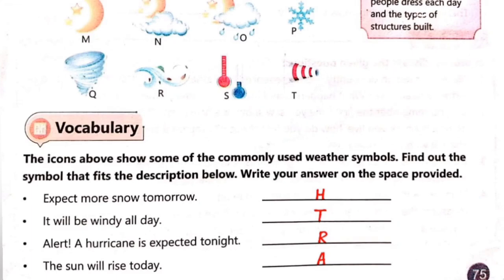The icons above show some of the commonly used weather symbols. Find out the symbol that fits the description below and write your answer on the space provided. Pehle hamare paas kuch weather symbols the jinke humne meanings discuss kiye, ab hamare paas weather ki description maujood hai aur humne batana hai ke wo in symbols mein se kis ke saath fit karti hai. First one is 'expect more snow tomorrow' — answer is H. Next, 'it will be windy all day' — answer is T. Number 3: 'alert, a hurricane is expected tonight' — that is symbol R. Next, 'the sun will rise today' — that is A.